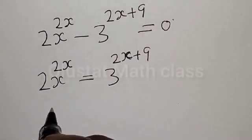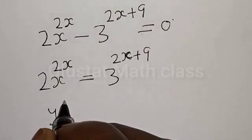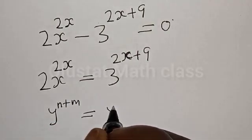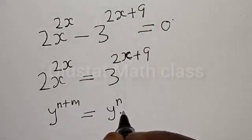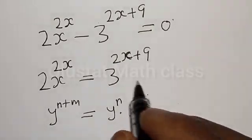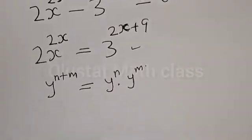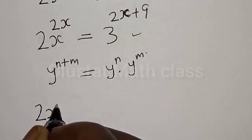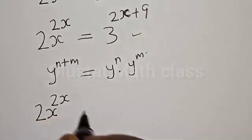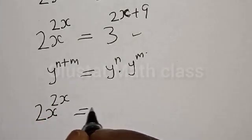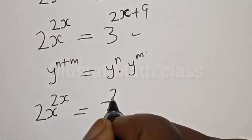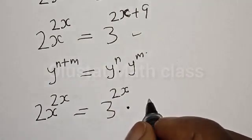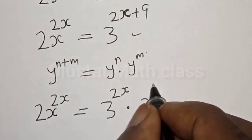Now remember that if you have y raised to power n plus m, it's the same thing as y raised to power n multiplied by y raised to power m. So we write the right-hand side as: 2s raised to power 2s is equal to 3 raised to power 2s multiplied by 3 raised to power 9.